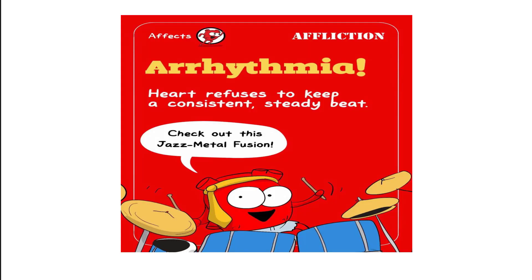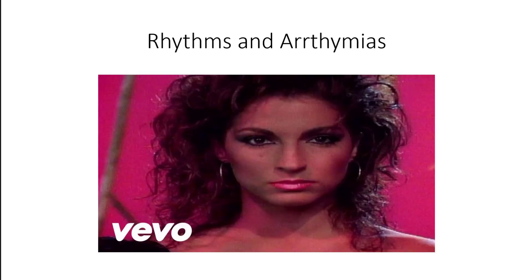Okay guys, welcome back. So now we'll get into some arrhythmias or dysrhythmias. Basically, what an arrhythmia is — we talked about all the normal things that should happen in the ECG. An arrhythmia or dysrhythmia, which we're calling them more often now, represents some sort of abnormality in the pattern or beating of the heart, and the beating is due to the electrical activity being kind of haywire.